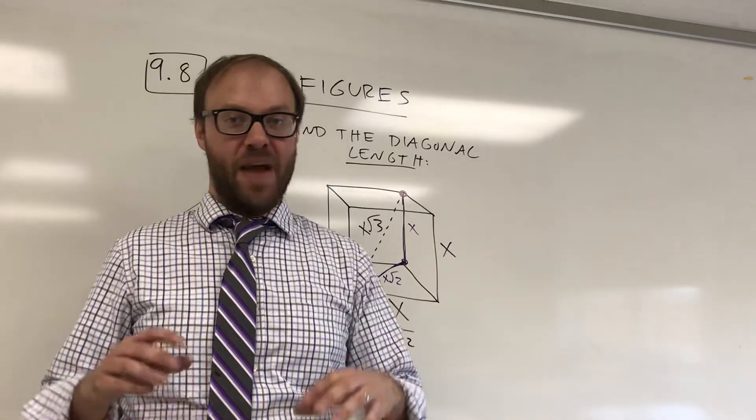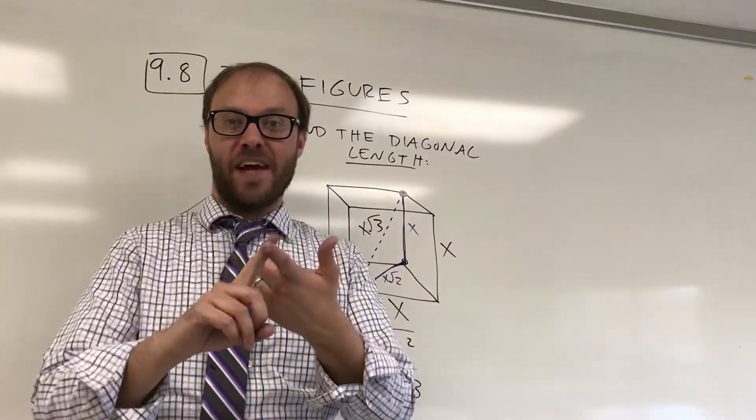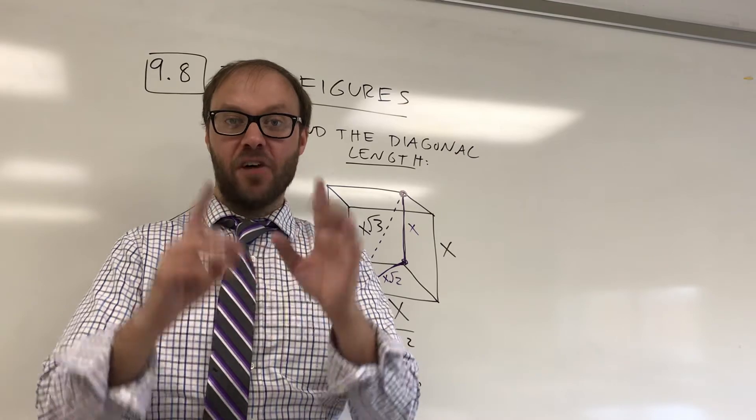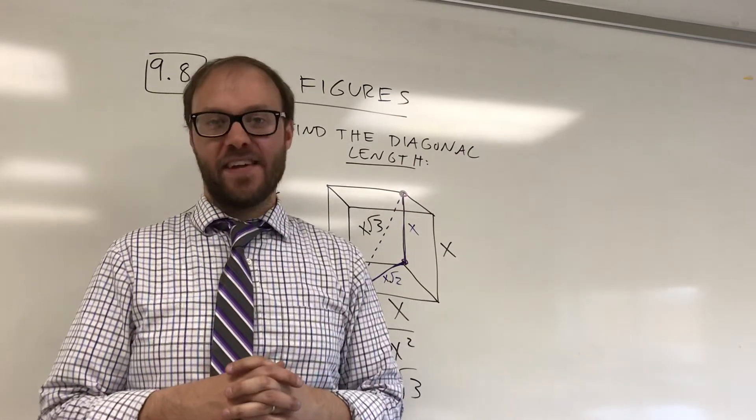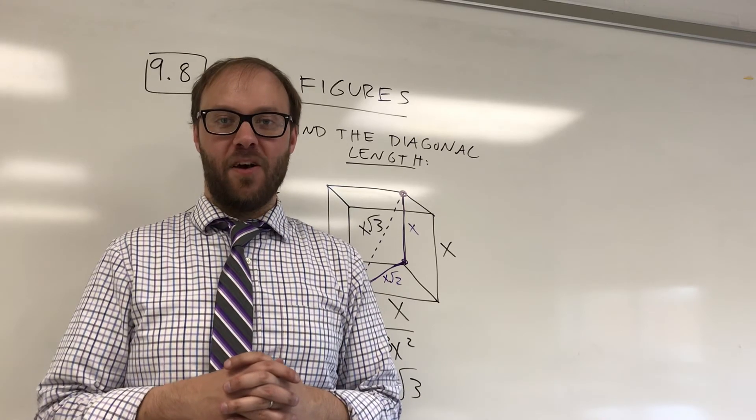But anyway, the pattern, very simple. Multiply side lengths by radical 3 to get the diagonal of a cube. Divide the diagonal by radical 3 to get the side lengths of the cube. Hope that helps.